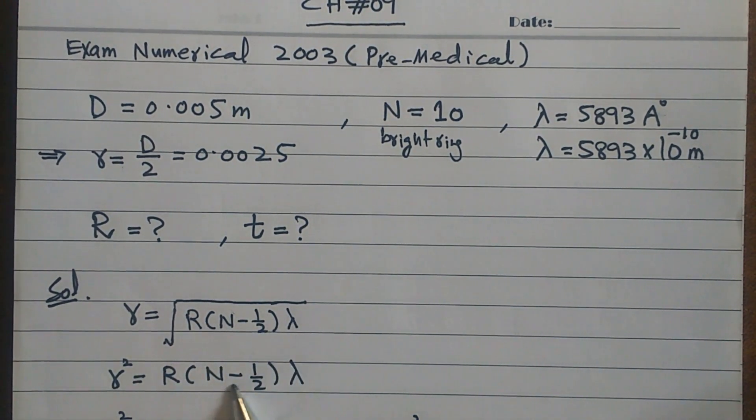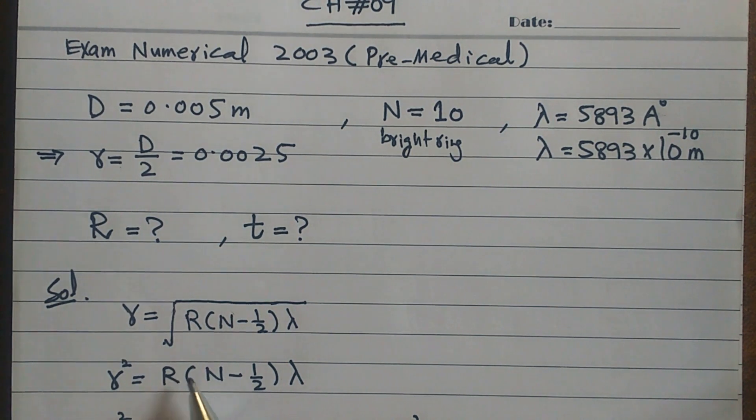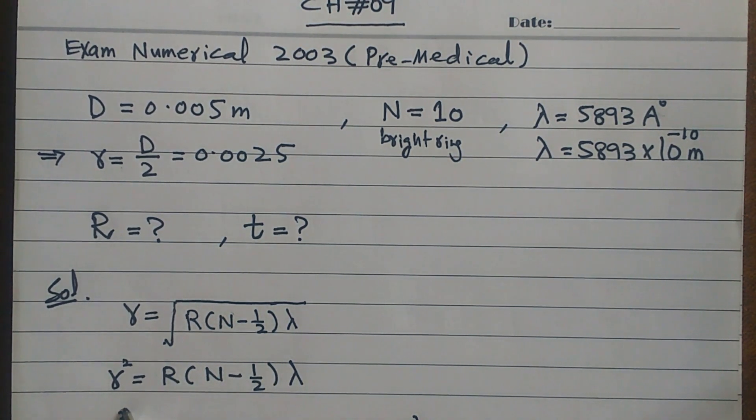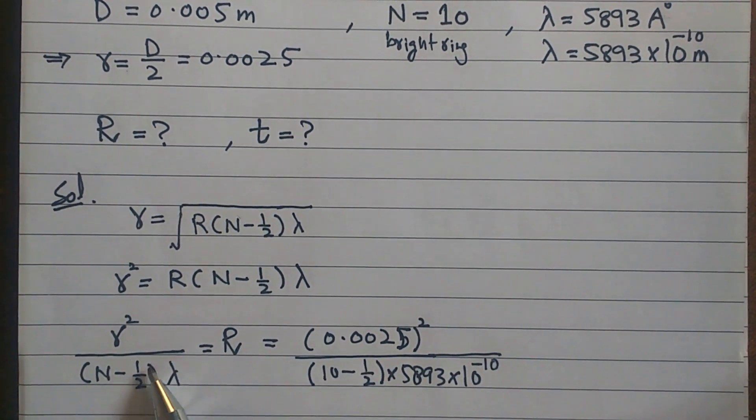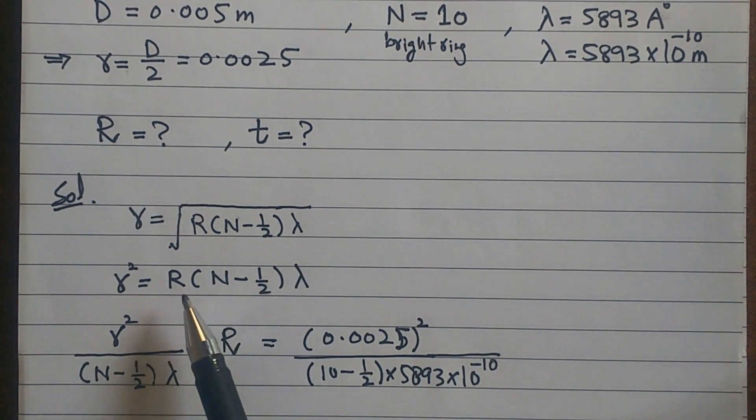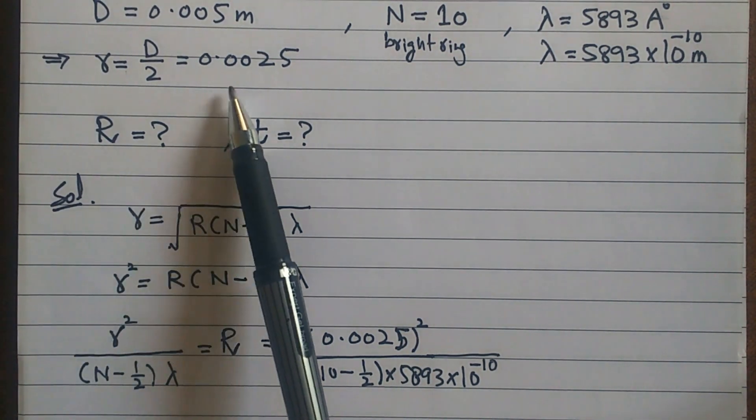R times N minus half lambda as it is. Now I want R, so this is N minus half and lambda. This whole thing multiply or divide the equation, so divide this whole equation. This is capital R.